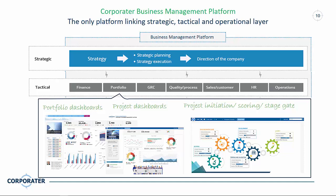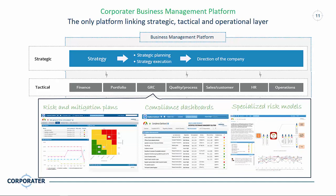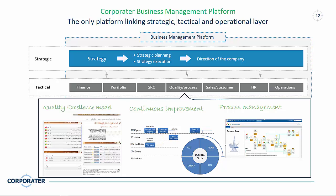We also do a lot of project and portfolio work in Corporator. Clients use it as a portfolio dashboard — even if you have a dedicated project application, the challenge with project management tools is getting the full overview. You can extract projects and information into a portfolio dashboard in Corporator and add additional dimensions like risk management. We also have functionality for risk mitigation plans, compliance, specialized risk models, quality management, quality excellence models, and continuous improvement models like Deming's quality circle.